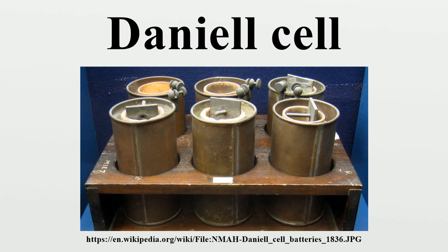In the Daniell cell, copper and zinc electrodes are immersed in a solution of copper sulfate and zinc sulfate respectively. At the anode, zinc is oxidized per the following half reaction: Zn → Zn²⁺ + 2e⁻. At the cathode, copper is reduced per the following reaction: Cu²⁺ + 2e⁻ → Cu. The total reaction being: Zn + Cu²⁺ → Zn²⁺ + Cu.